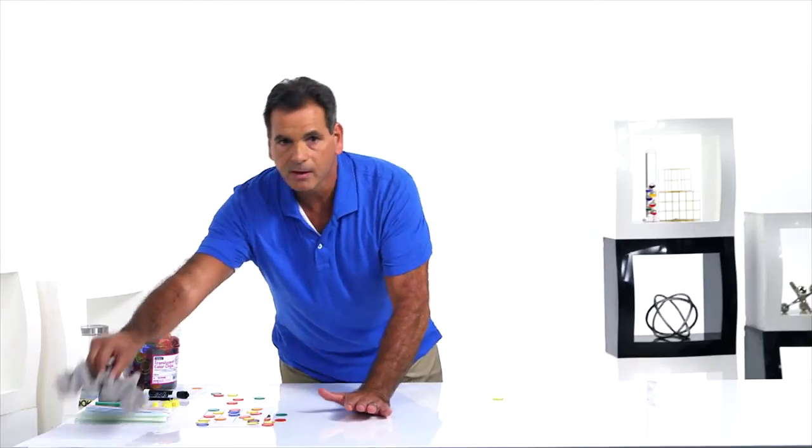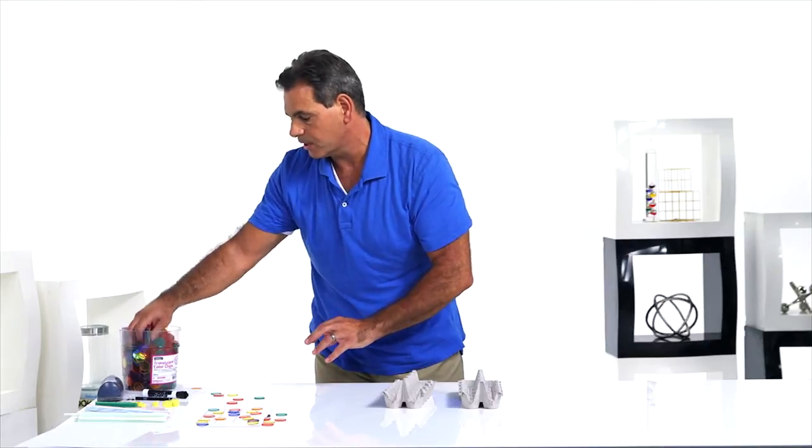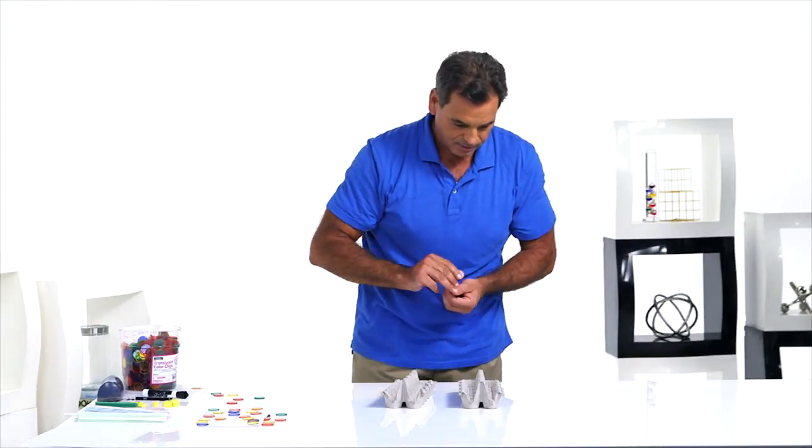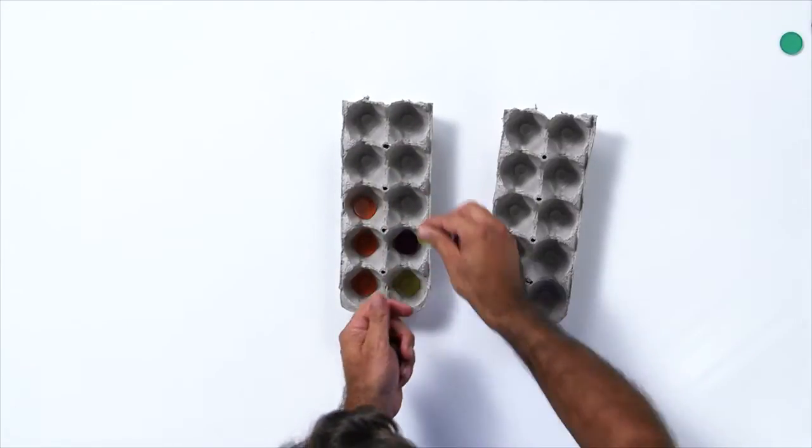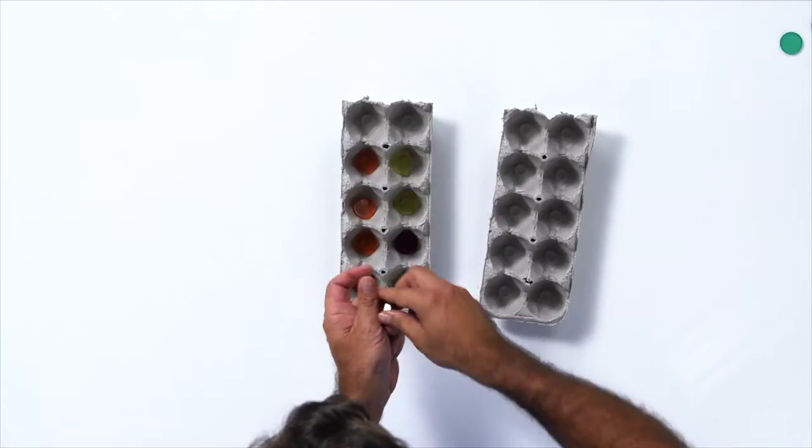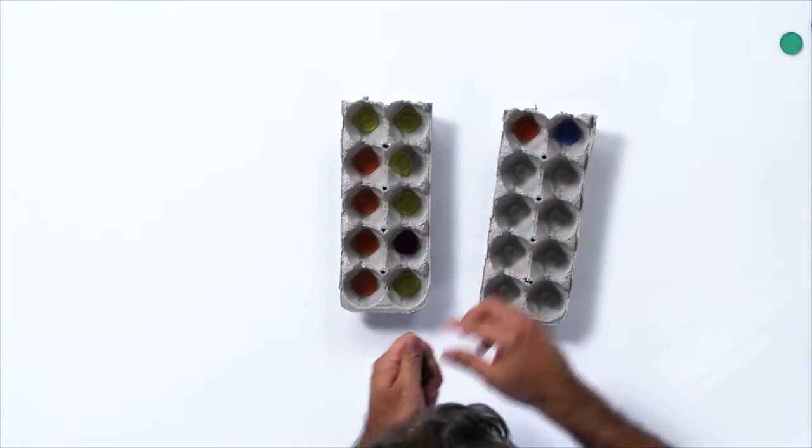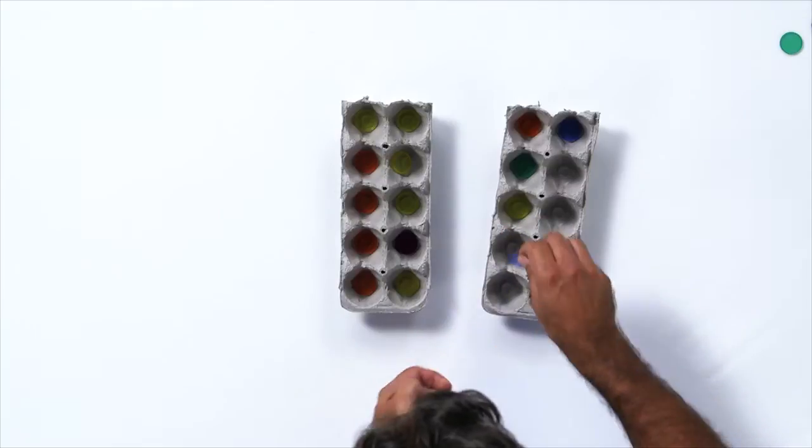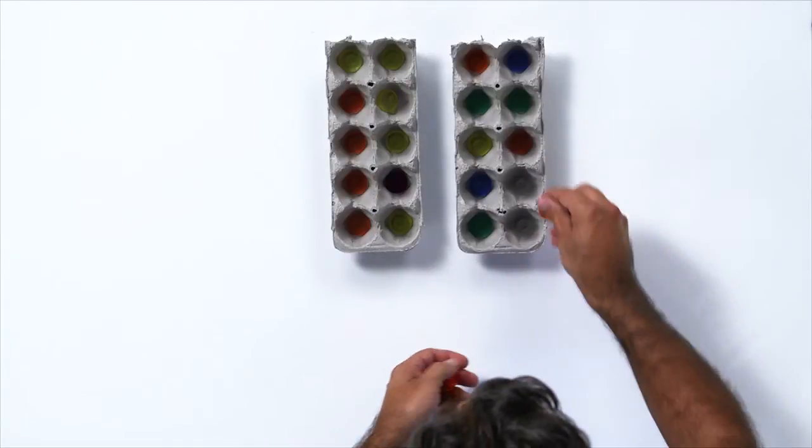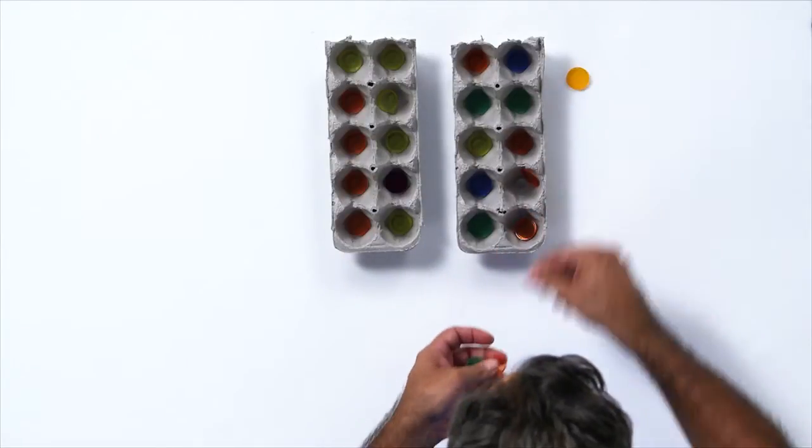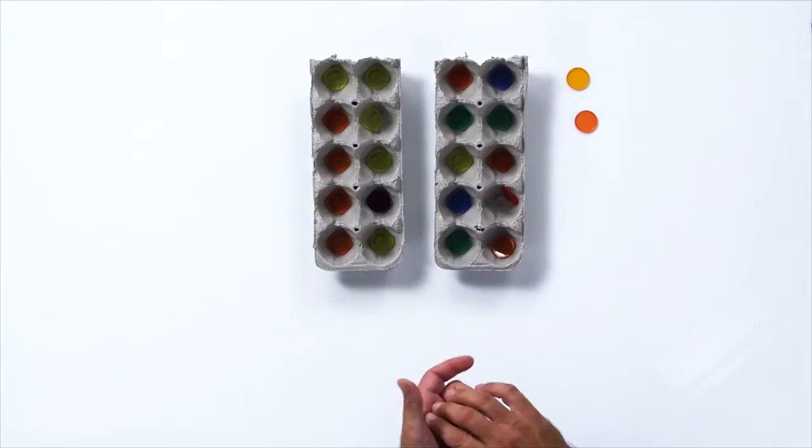Let's look at egg crates. 16 plus 6. I love egg crates and most kids love them too. Because why? You can throw the chips in. 1, 2, 3, 4, 5, 6, 7, 8, 9, 10, 11, 12, 13, 14, 15, 16. Then we add 6. 1, 2, 3, 4, uh-oh, 5, 6. We have two tens frames and two left over. 10, 22. 16 plus 6 is 22.